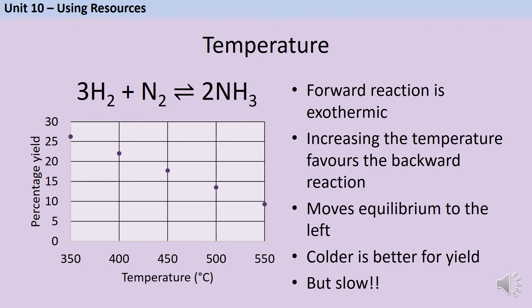The forward reaction in the Haber process is exothermic, so heating it up would favour the backward reaction and produce less ammonia. From a yield perspective, running the reaction as cold as possible would make the most ammonia — but we already know that cooling a reaction slows it down, potentially to a year to make any. So instead a compromise temperature of 450°C is used, giving a yield of about 15–17%, which is low but fast enough to be economically worthwhile.